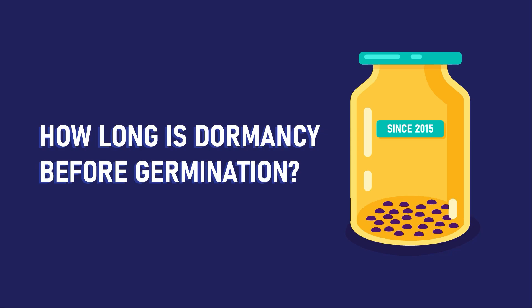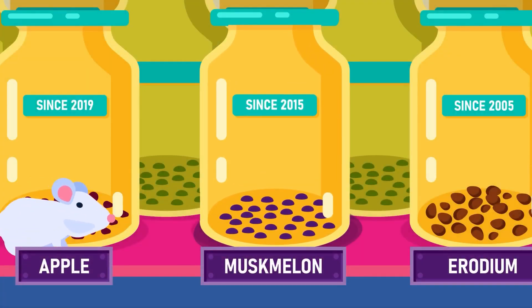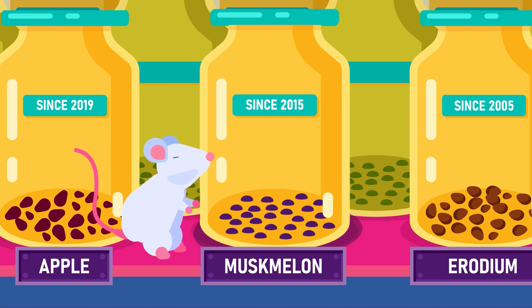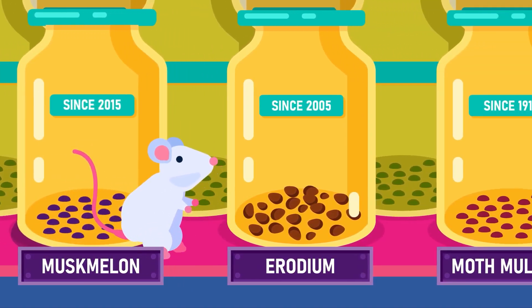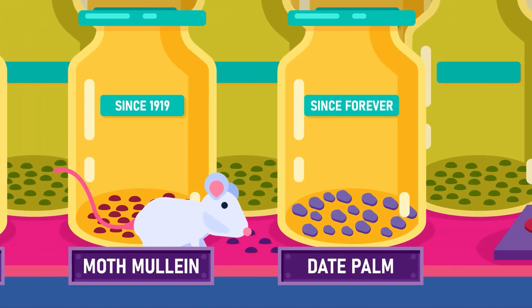How long can a seed remain dormant and still germinate? Seeds of members of the melon family can germinate after a few years of storage. Plants from the deserts have seeds which can germinate after 15 years of dormancy. Seeds from moth mullein, buried in jars at the University of Michigan, germinated after an astounding 101 years of storage.